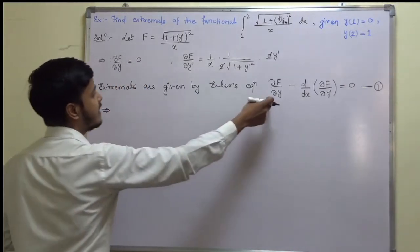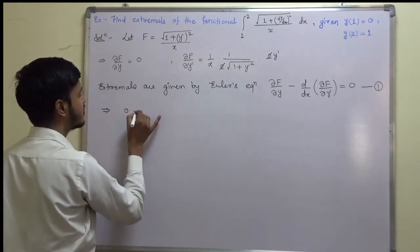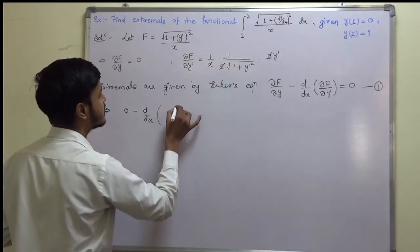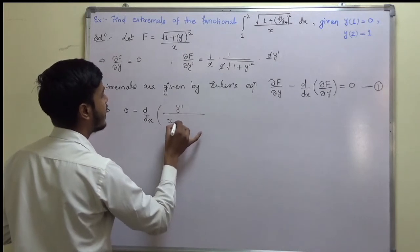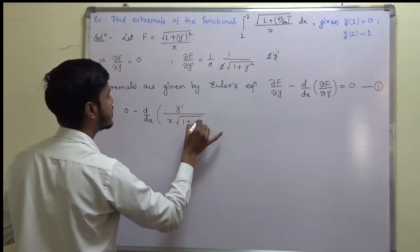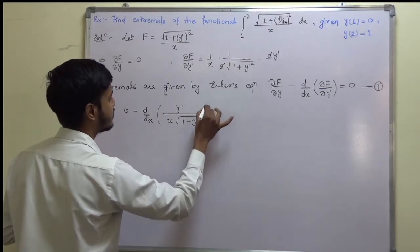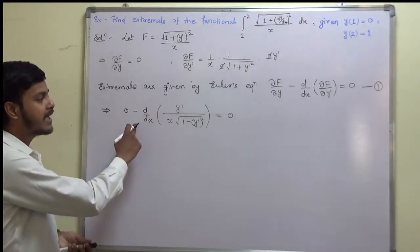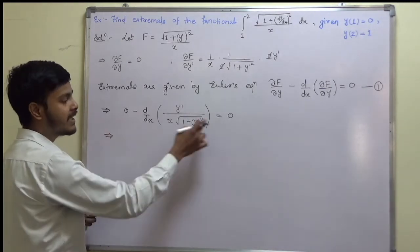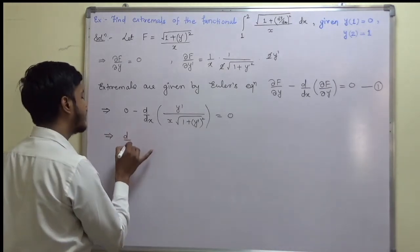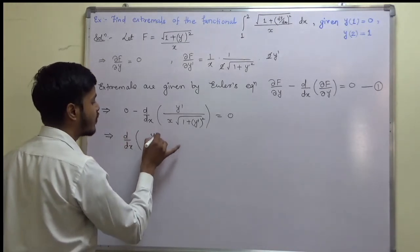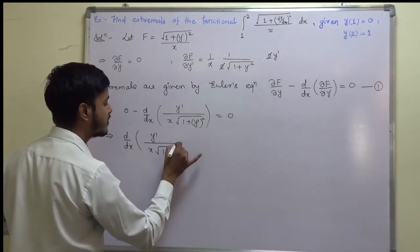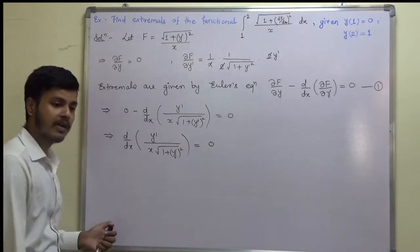Substituting, Euler's equation becomes: 0 − d/dx [y′ / (x · √(1 + y′²))] = 0, which simplifies to d/dx [y′ / (x · √(1 + y′²))] = 0.